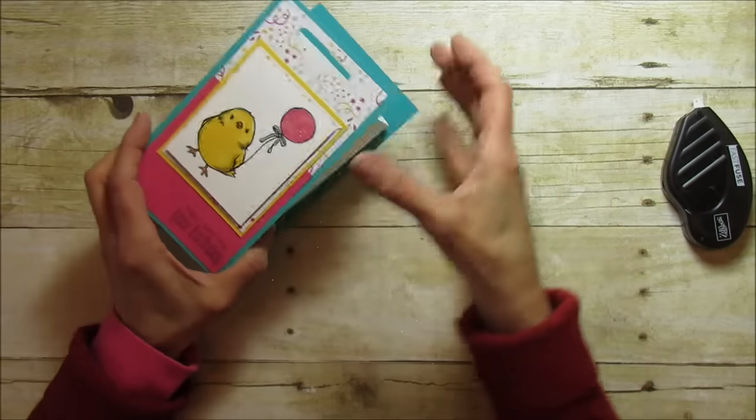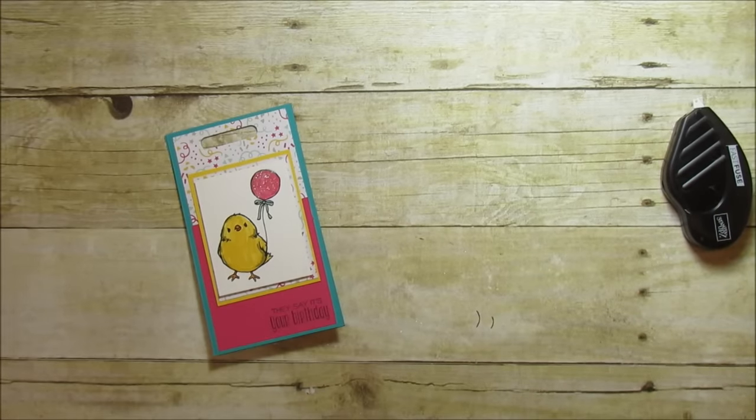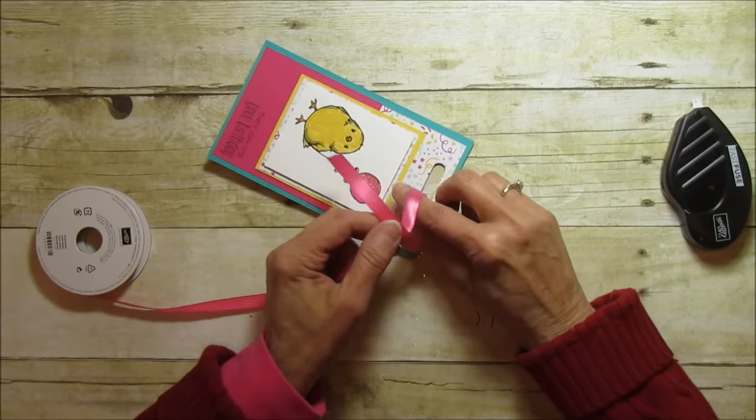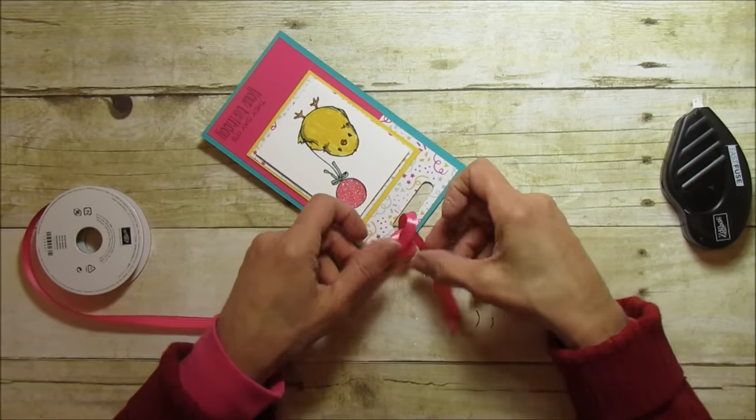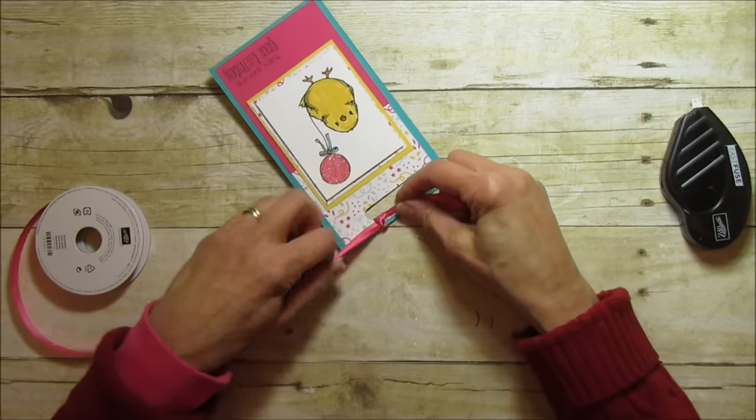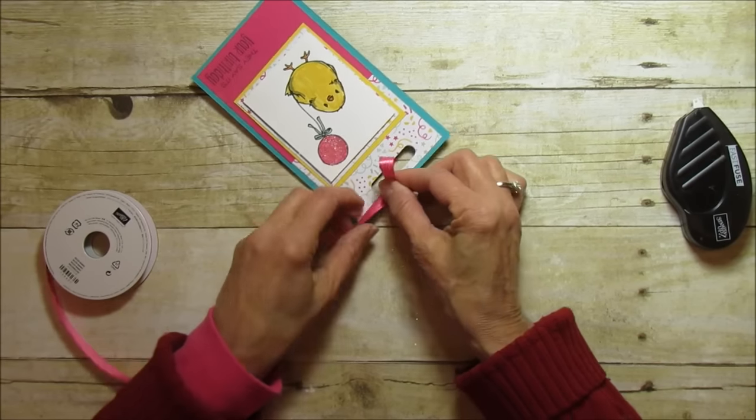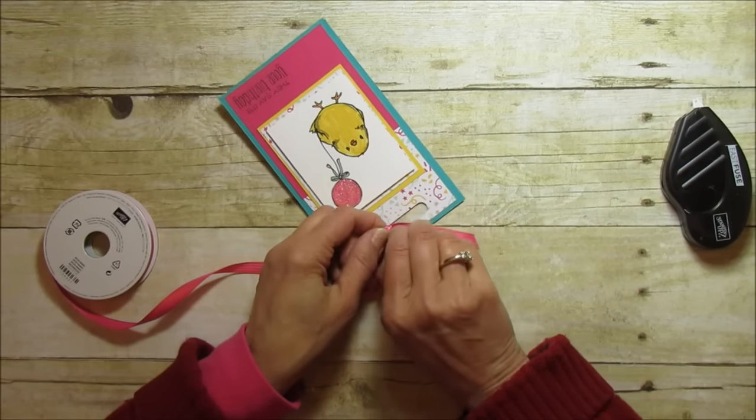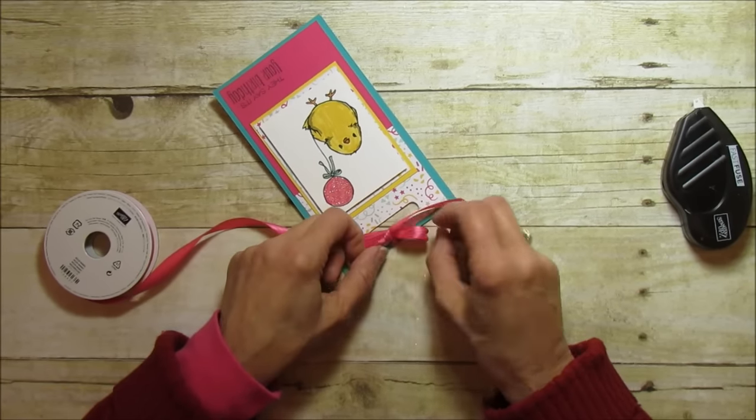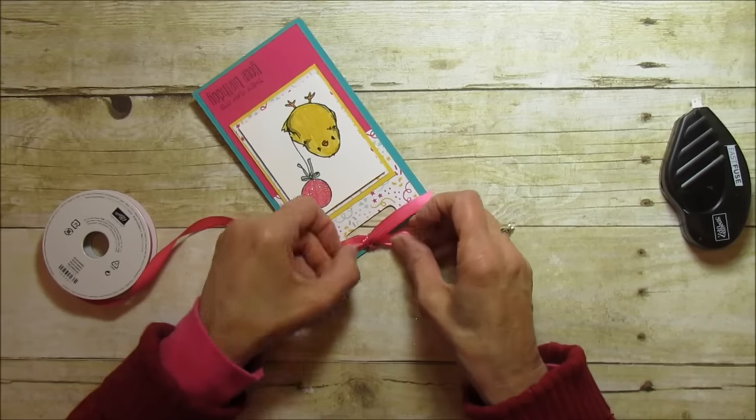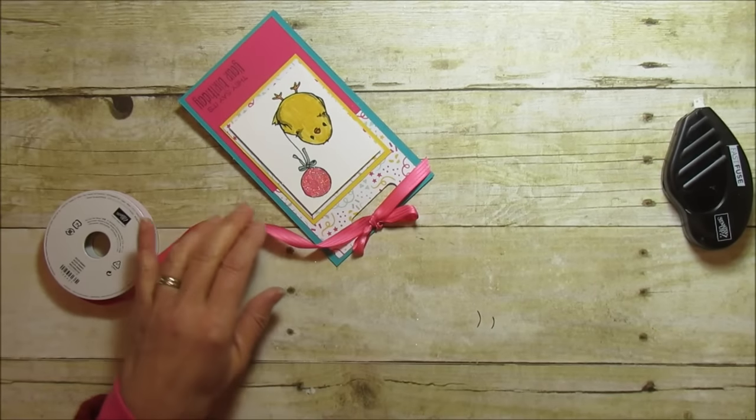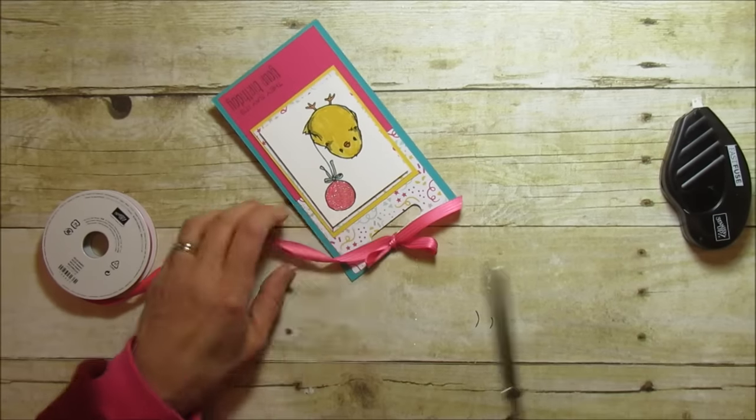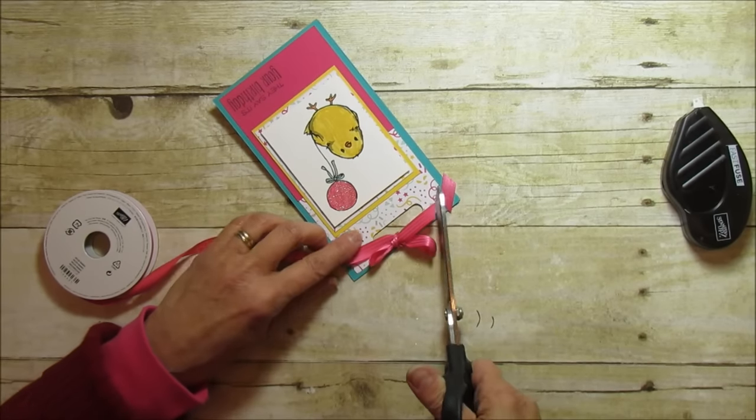And then last we're going to just put a little ribbon on it and I'm using the stitched Melon Mambo ribbon but once you get your goodies inside you can tie it around both or you can tie it around just one handle. So I'm gonna put this, you can tie a knot, you can tie a bow whichever you prefer. I kind of like the bow, I think it looks cute. This isn't the best bow but I will fix it later.